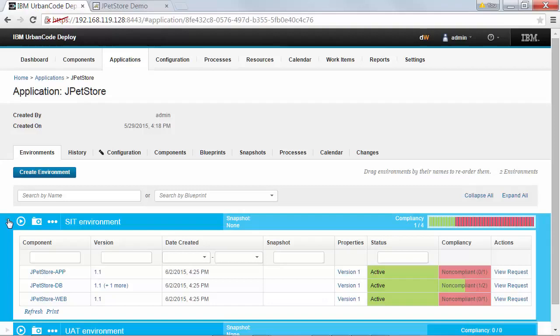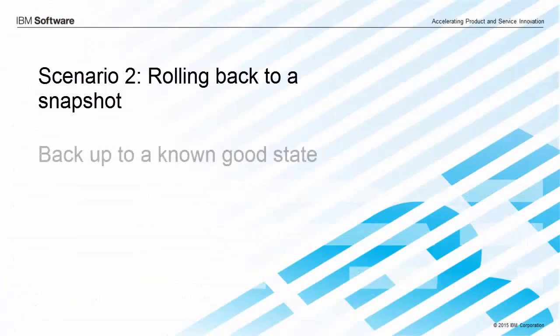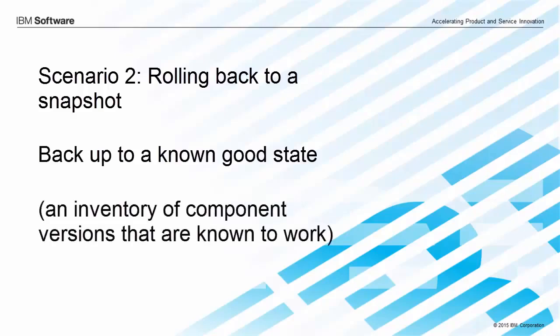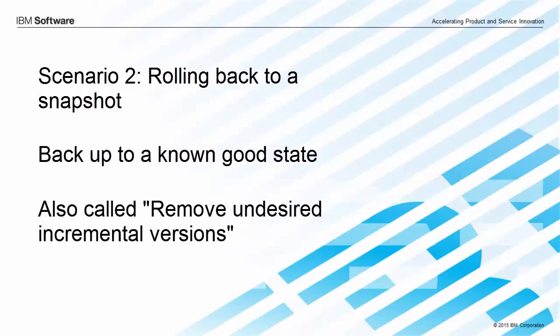So that's the first rollback scenario: detecting that a deployment is failing and automatically redeploying an older version. For the second rollback scenario, we're going to need a snapshot. Snapshots are great because they store component versions and properties that we know deploy properly, so when something goes wrong I can roll back to a snapshot and get back to a happy state. It's a good idea to take snapshots after successful deployments. This type of rollback uninstalls everything that is not in a snapshot, so if you've got a bunch of incremental versions installed, it removes any versions that aren't in that snapshot. This type of rollback also works with full versions, but in that case it's just as easy to install a full version over the existing versions.